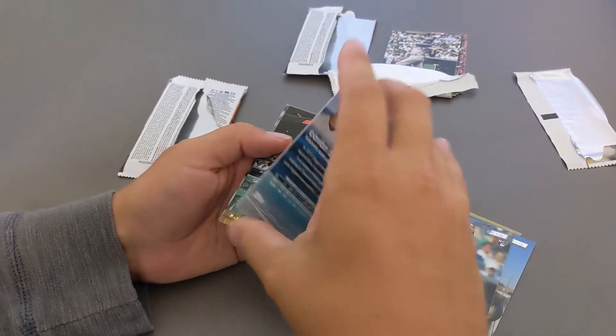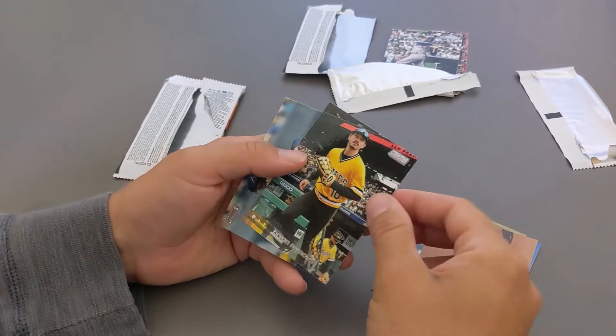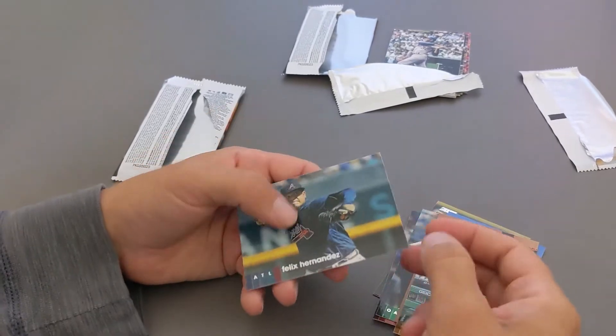Looks like a Cavan Biggio insert. Red. And we have Bryan Reynolds and Felix Hernandez.